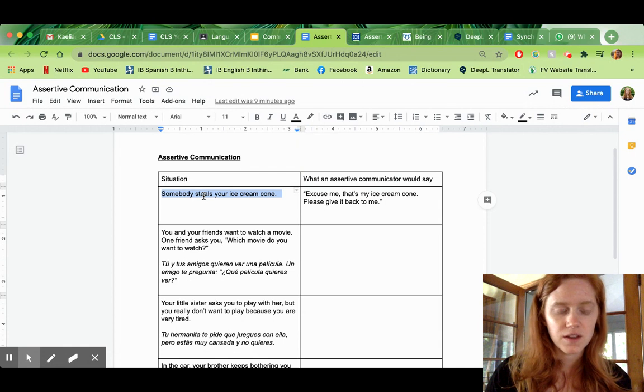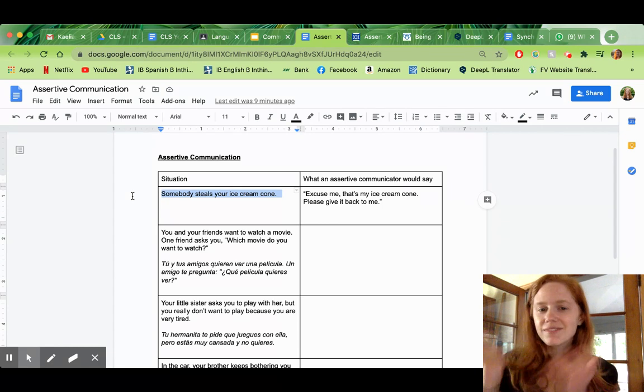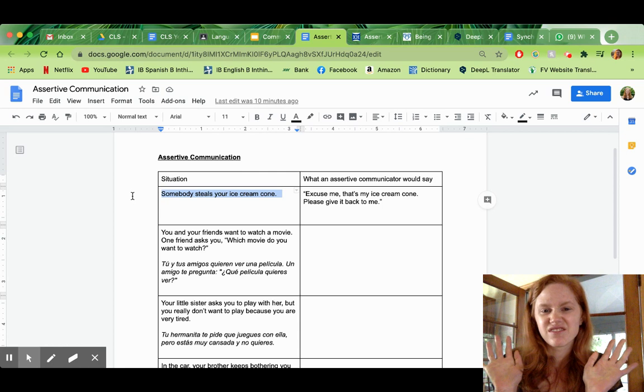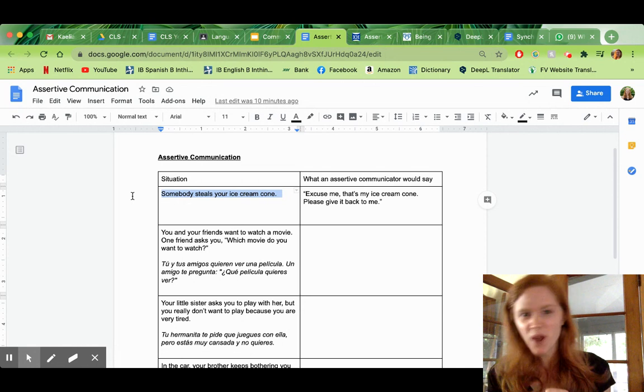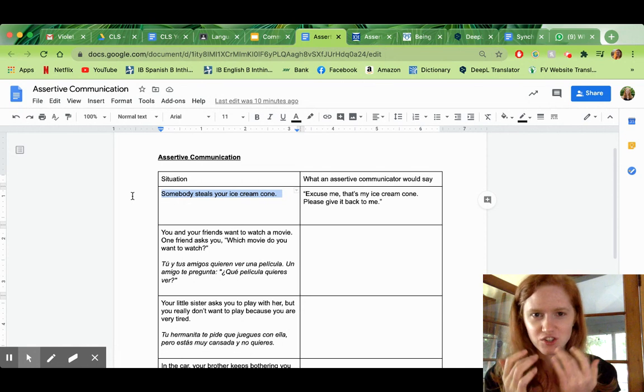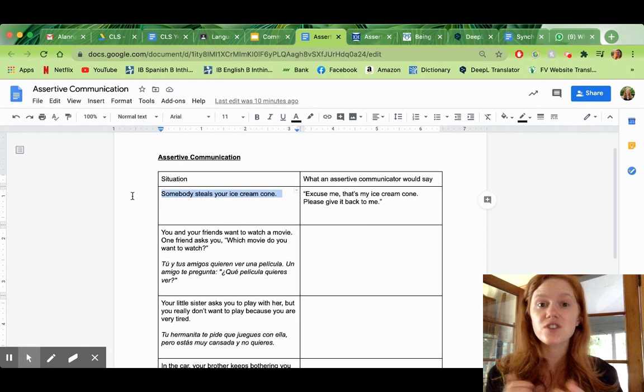For example, we looked at the example last time of somebody stealing Spongebob's ice cream cone. Do you remember that? And Spongebob just says, you can have it. He's a very passive communicator. He just sort of lets him take his ice cream. But Plankton is very aggressive. And he says, hey, give back that ice cream cone. And he yells at him, right? And the guy starts crying. So, those are two very opposite styles of communication. What would an assertive communicator say in that same situation?